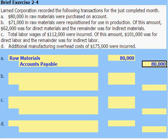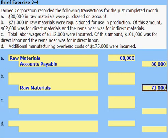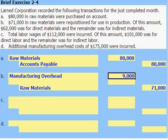Item B: $71,000 in raw materials were requisitioned for use in production. Of this amount, $62,000 was for direct materials and the remainder was for indirect materials. Raw materials will decrease, recorded with a $71,000 credit. We will have a $9,000 debit to manufacturing overhead for the indirect materials — that's $71,000 minus $62,000 — and the $62,000 for direct material will be an increase to work in process.